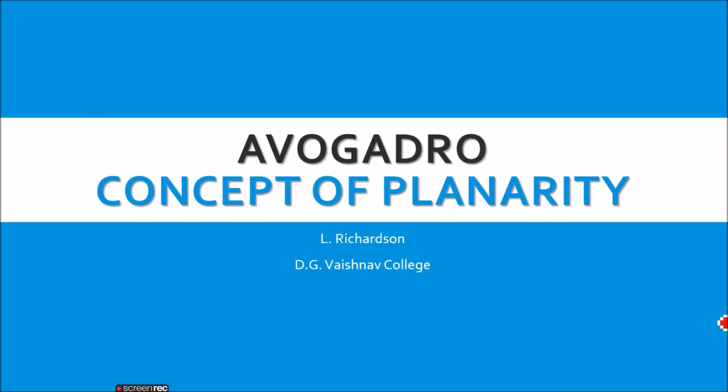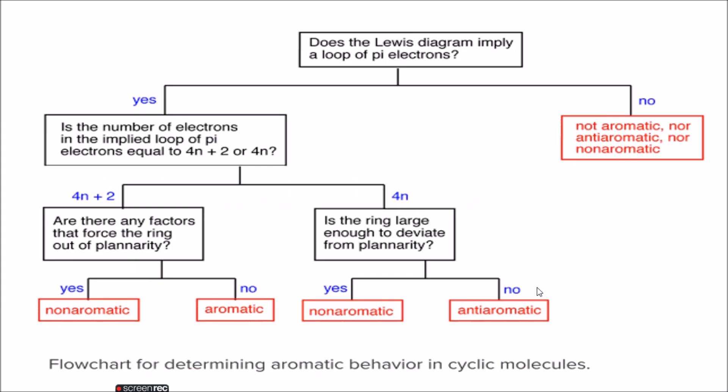Hello everyone, it's Richardson here from DG Vaishnav College. Today in this video we will discuss and demonstrate how to use Avogadro to understand the concept of aromaticity, in which a very important concept, the planarity of the molecule, is involved. You know that in aromaticity we have around three conditions. For a molecule to be aromatic it must obey three conditions: the molecule must be cyclic,